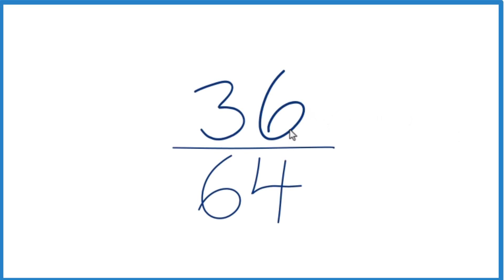Let's simplify the fraction 36 over 64. What we want to do is find another fraction that's equivalent to 36 over 64. It has the same decimal value when we divide 36 by 64. It's just that it'll be reduced or simplified down to lowest terms.